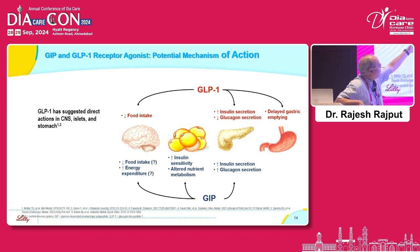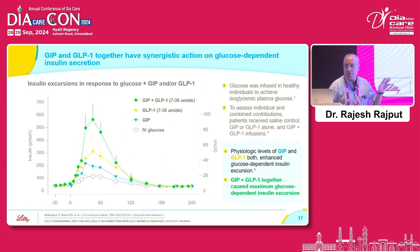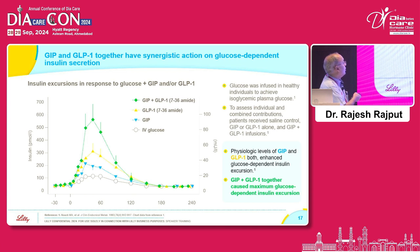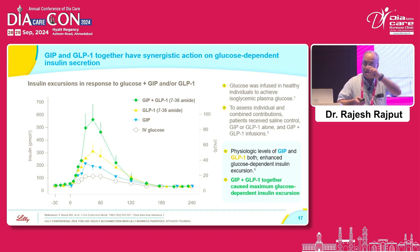Studies, particularly from rat models, have shown that GIP is also associated with a decrease in food intake and increase in energy expenditure, though these are not from human studies. When you compare IV glucose versus oral glucose and do the same experiment by giving GIP alone, GLP-1 alone, and a combination of GIP and GLP-1, the combination — shown as a green diamond — results in a more brisk insulin response than either hormone alone, demonstrating that the actions of GLP-1 and GIP are complementary.